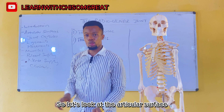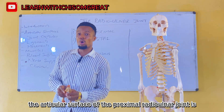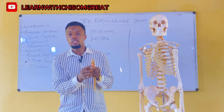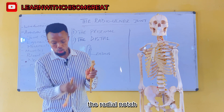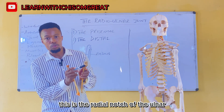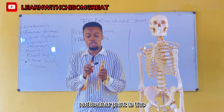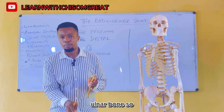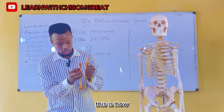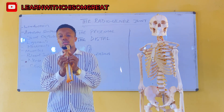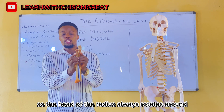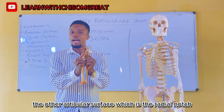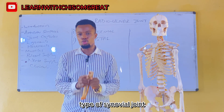The articular surface of the proximal radioulnar joint is the head of the radius, which articulates with the radial notch of the ulna. The head of the radius always rotates around the radial notch, which makes it a pivot type of synovial joint.